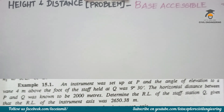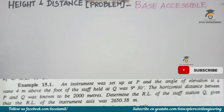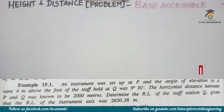First, an instrument was set up at P. The angle of elevation to a point 4 meters above the foot of the staff held at Q was 9 degrees 30 minutes. The horizontal distance between P and Q was known to be 2000 meters. Determine the RL of station Q, given that the RL of the instrument axis was 2650.38 meters.